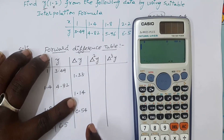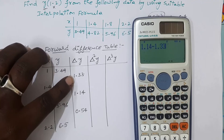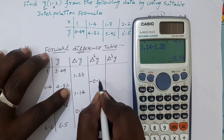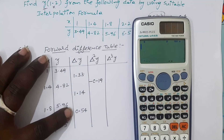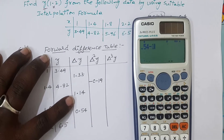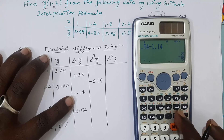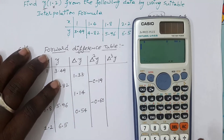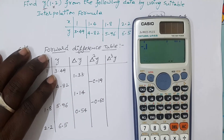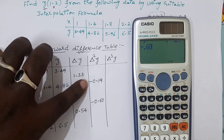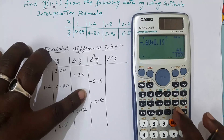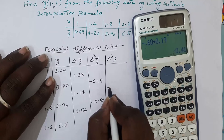Now write the second-order differences: 1.14 − 1.33 = −0.19; 0.54 − 1.14 = −0.60. Don't forget the negative signs. Then the third-order difference: −0.60 − (−0.19) = −0.41.